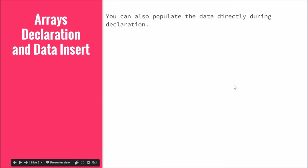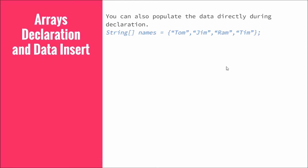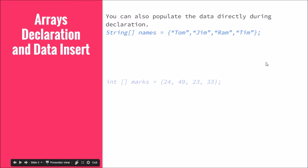You can also populate data directly during declaration of arrays. You say 'String[] names = {Tom, Jim, ...}' — those are the strings you want to store. Since there are four of them, you are creating an array of four elements and pre-populating those memory blocks with the strings, giving the values and indirectly giving the number of elements. The same applies for int arrays as well.